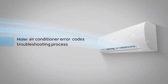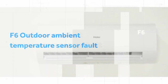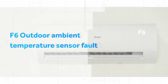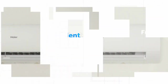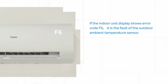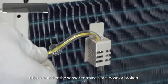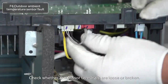HAIER air conditioner error codes troubleshooting process — F6 outdoor ambient temperature sensor fault. If the indoor unit display shows error code F6, it is the fault of the outdoor ambient temperature sensor. Check whether the sensor terminals are loose or broken.